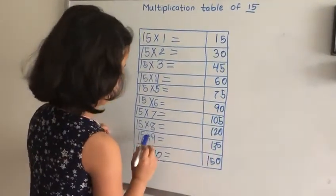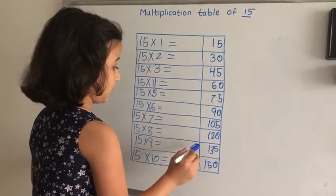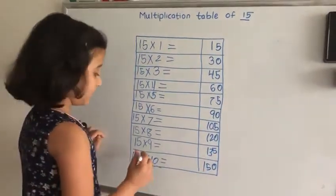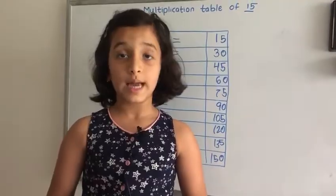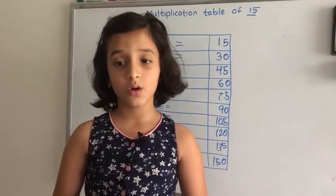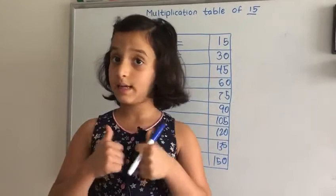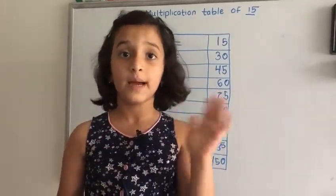15 times 9 equals 135, 15 times 10 equals 150. Bye!